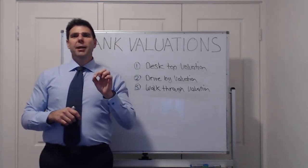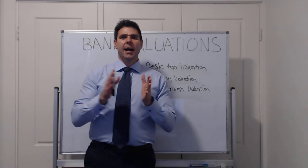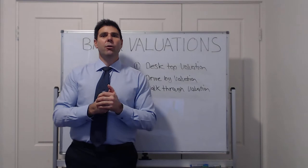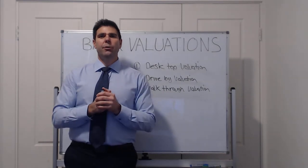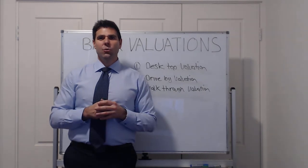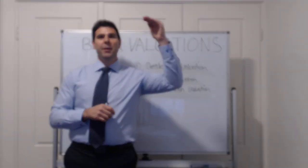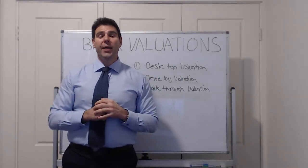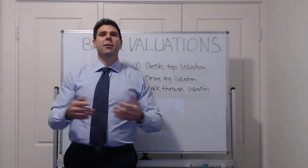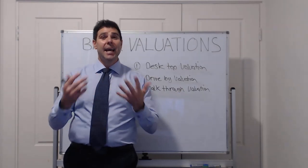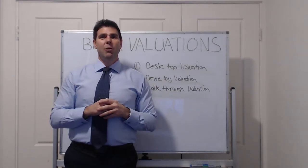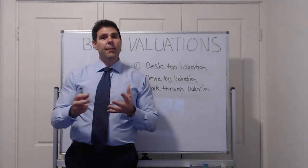Now with property valuations, what we see is a variation from one valuer to the next. So if we've got three different valuers to go and value the same property, we're likely going to get three different results—one where you need it, maybe one a little bit higher, and one substantially lower. So we know that happens, that's just property valuing and valuers, it's not an exact science. So we need to work out how we can actually get our valuations where we need them to be, to be able to access that equity.